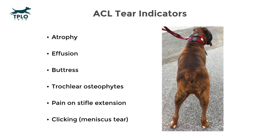Other indicators that a dog may have a partial or complete ACL tear include atrophy, which is a loss of muscle — you can notice that one leg is smaller in diameter than the other. Effusion can usually be felt by a veterinarian. Then there is buttress, or medial buttress, which is swelling on the inside of the dog's knee — excessive scar tissue as the body's attempt to stabilize the unstable ACL injury.